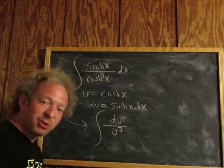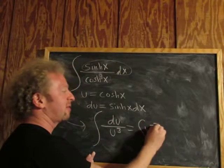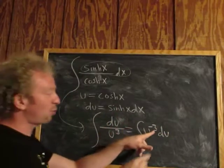Now to integrate this, it's u to a power. We have to bring it upstairs. And so we can write this as u to the negative 3 du. And now we have u to a power, so we can add one using the power rule.